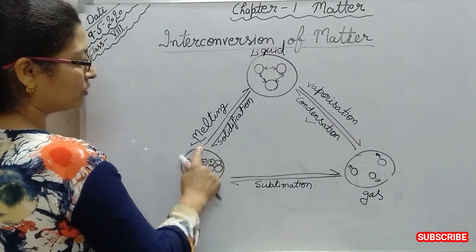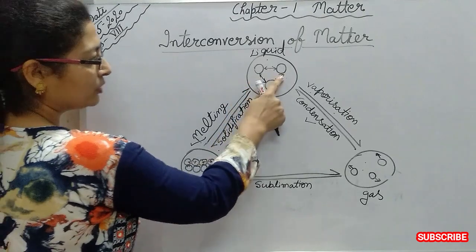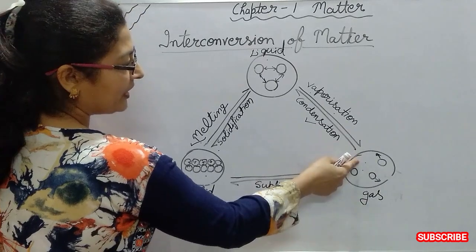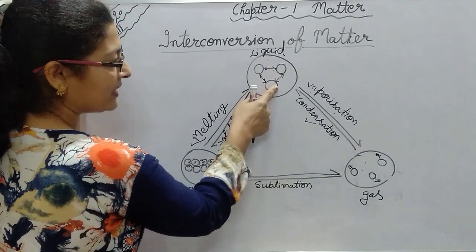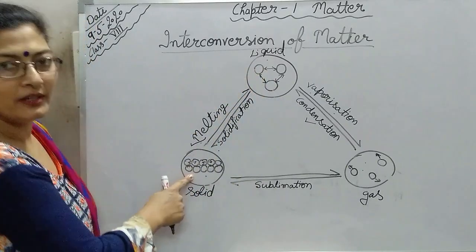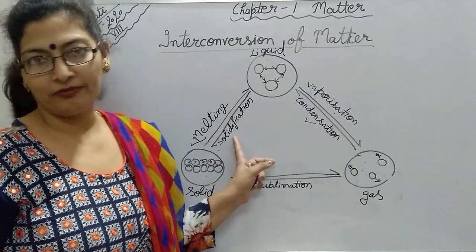First we go through melting—solid to liquid. Through vaporization, liquid to vapor. Vapor means gas. When coming back from gas to liquid, it is condensation. And liquid to solid is called solidification.